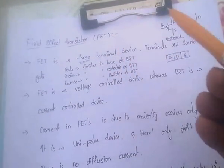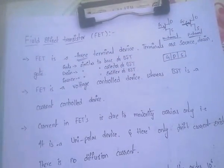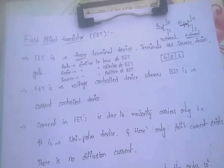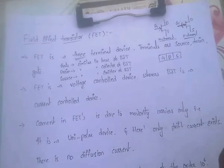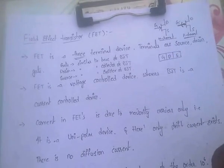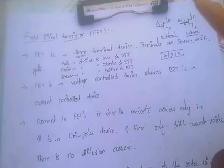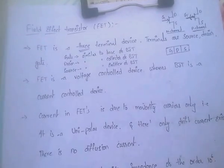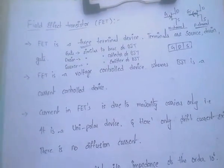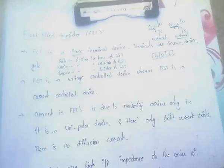FET is a Voltage Controlled Device — this is very important. Whereas BJT is a Current Controlled Device.